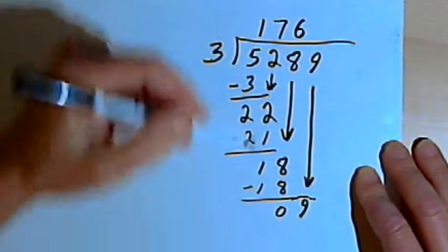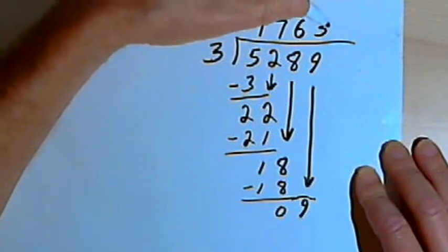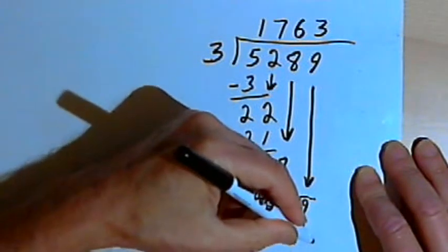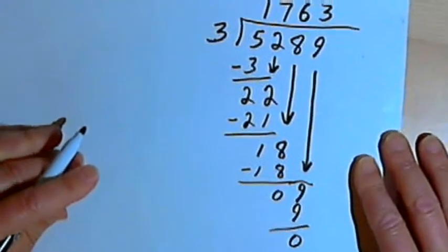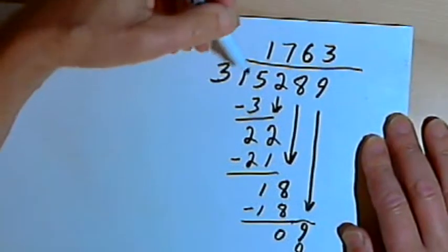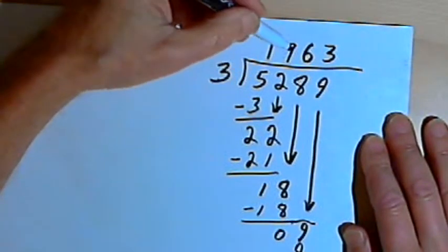And 3 goes into 9 3 times. 3 times 3 is 9. So there's no remainder. So I know the answer to this problem is 1,763.